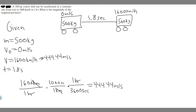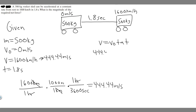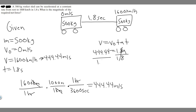To solve for acceleration, use the kinematic equation v = v₀ + at. We have v = 444.44, v₀ = 0, and t = 1.8 seconds. So 444.44 = 0 + a × 1.8, which gives 444.44 = 1.8a. Dividing both sides by 1.8 yields a = 246.91 meters per second squared.